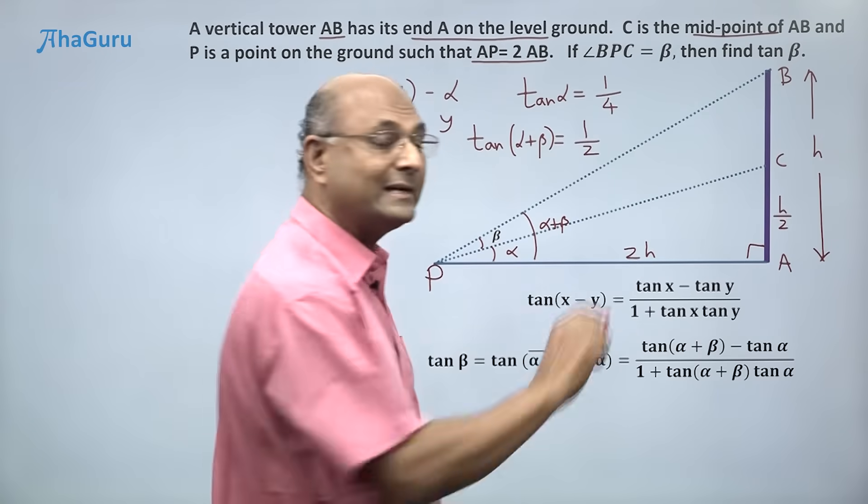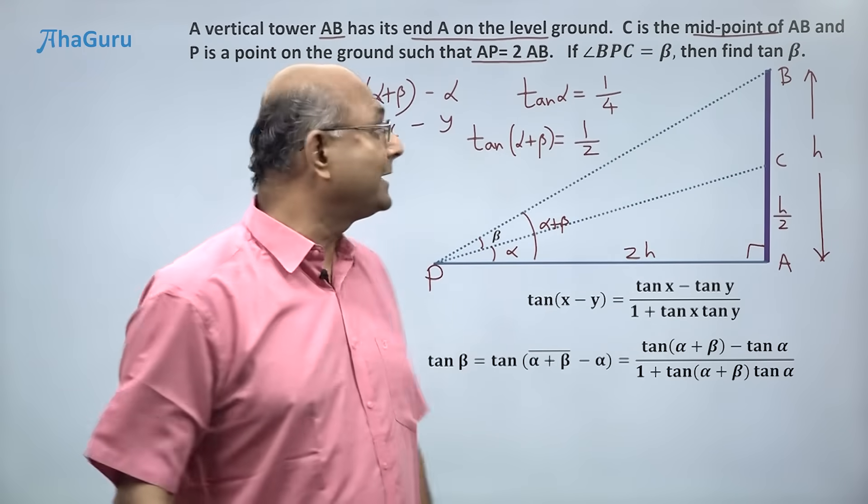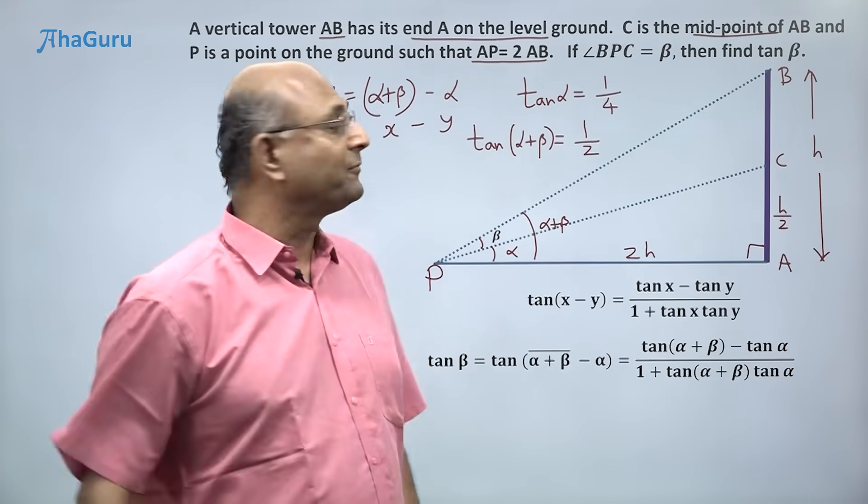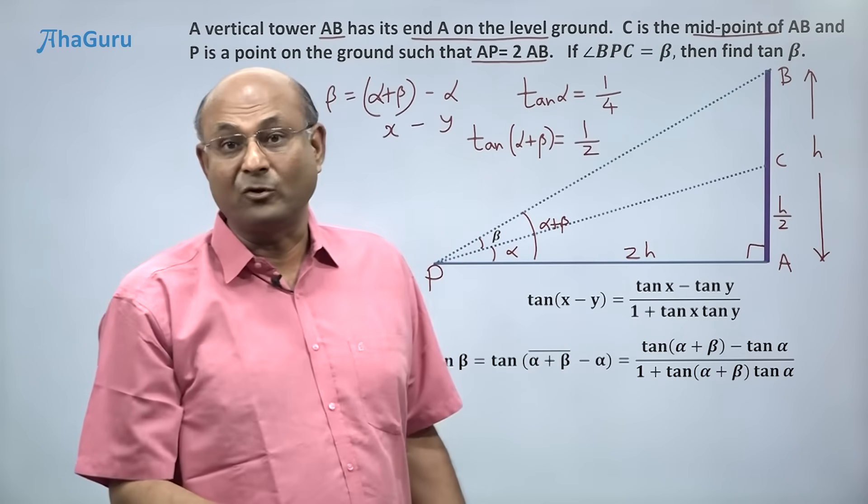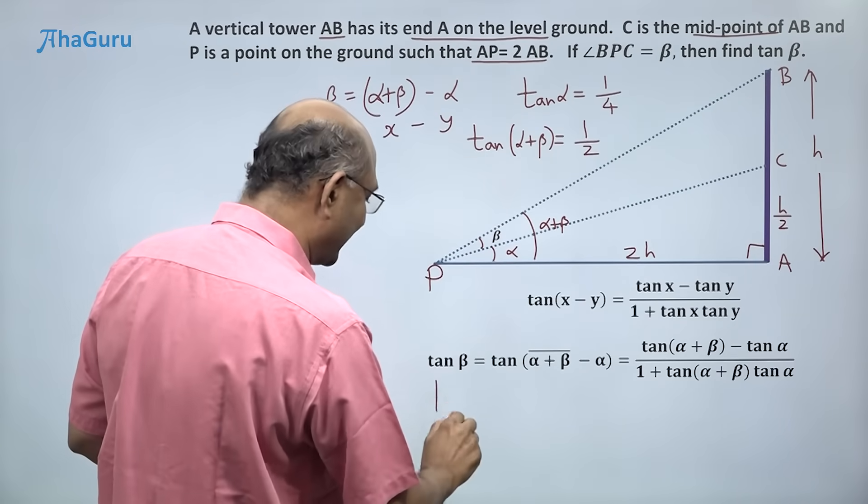Do you know tan of (alpha + beta)? Yes, we calculated that: half. Tan of alpha: 1/4. So all we are doing is substituting all of that here, and we will find tan beta.